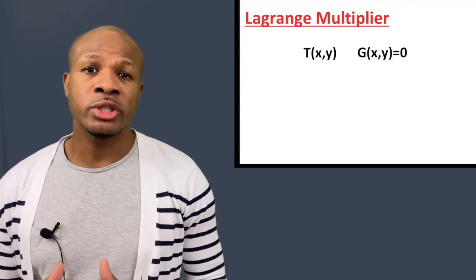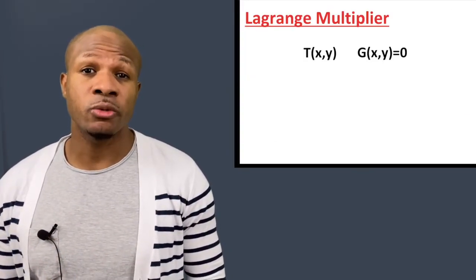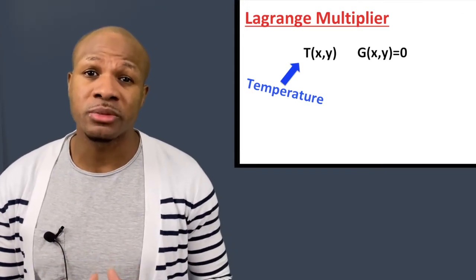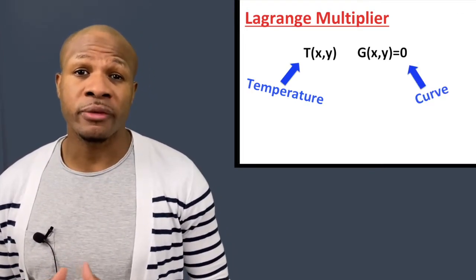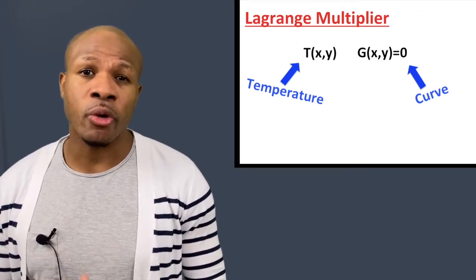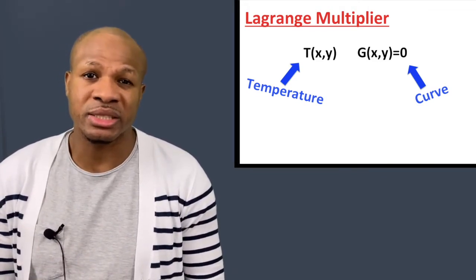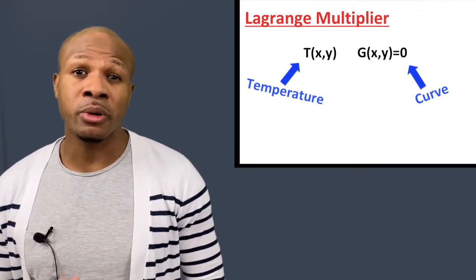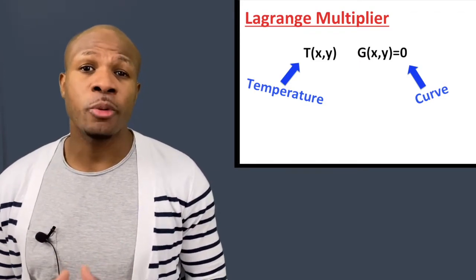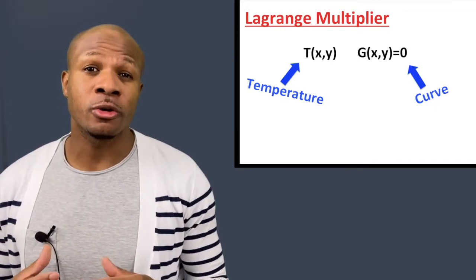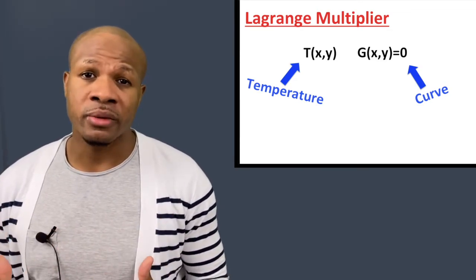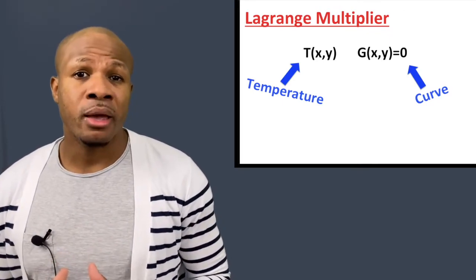With Lagrange multipliers, you're usually trying to find a stationary point of some function T, given that you are confined to some region or curve. That region or curve is defined by some function G. On the curve the ant is confined to, we require G to be a constant — usually zero — so G equals zero as long as we are on the curve. To find stationary points, we find where the temperature gradient points directly away from the curve.